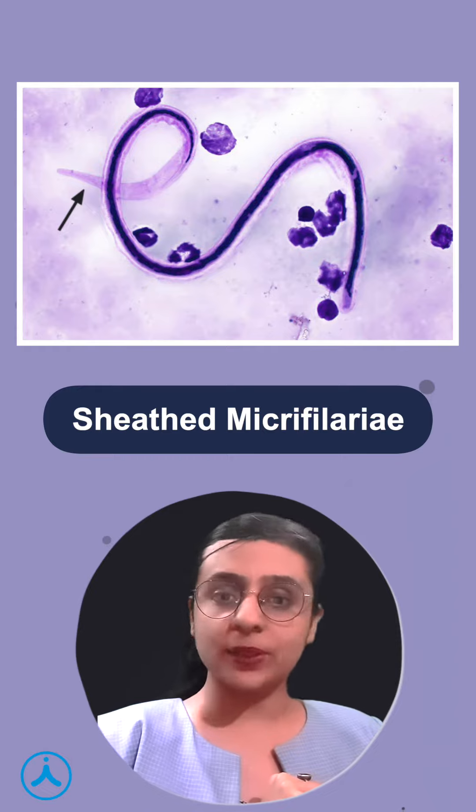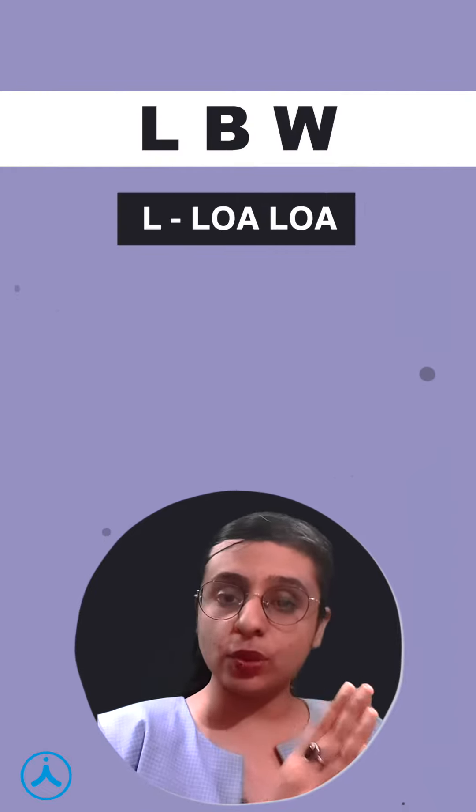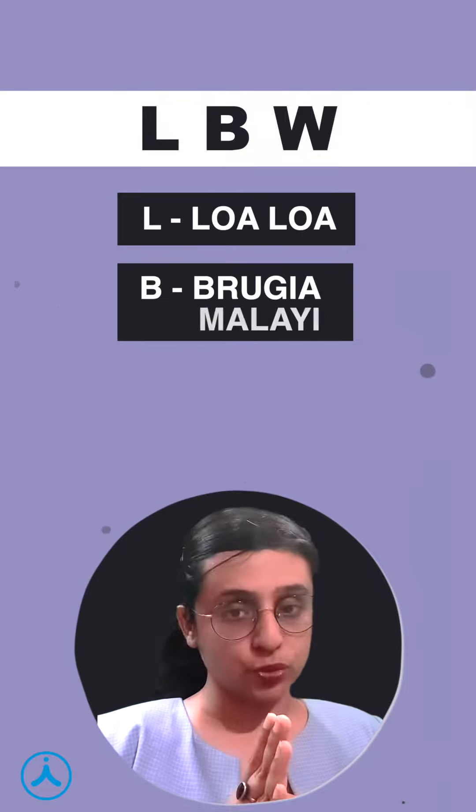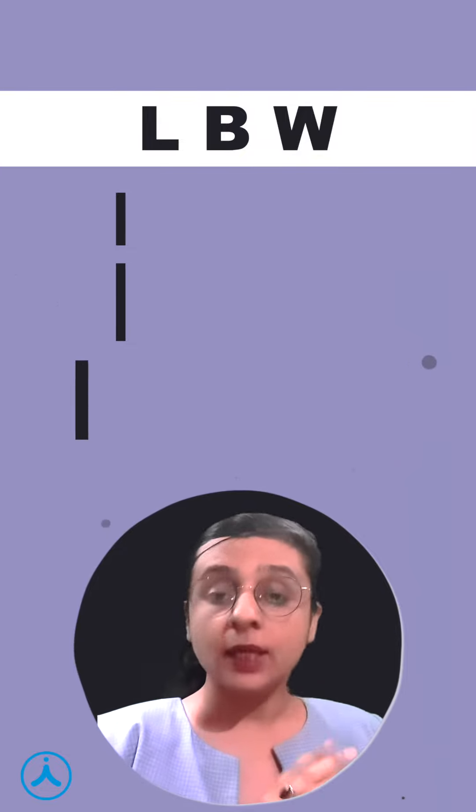You can remember with the help of an easy mnemonic: L, B, W. So L for Loa loa, B for Brugia malayi, and W for Wuchereria bancrofti.